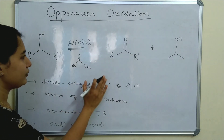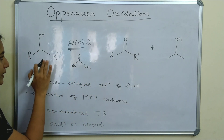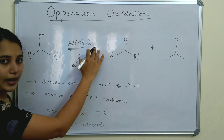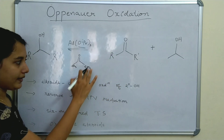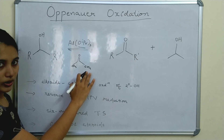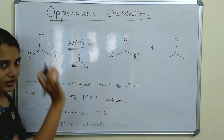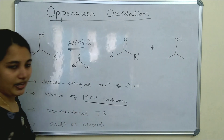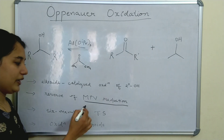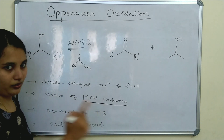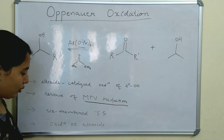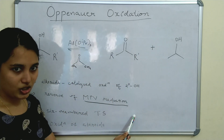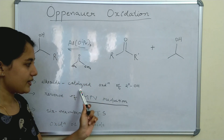So whenever oxidation of a secondary alcohol to the corresponding carbonyl compound takes place in presence of aluminium alkoxide and a ketone, that reaction is called Oppenauer oxidation. Another important thing is it is the reverse reaction of MPV reduction. We can see what is MPV reduction in another video.